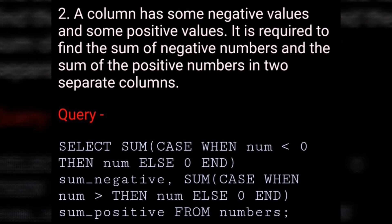A column has some negative values and some positive values. It is required to find the sum of negative numbers and the sum of positive numbers in two separate columns. SELECT SUM(CASE WHEN num < 0 THEN num ELSE 0 END) AS sum_negative, SUM(CASE WHEN num > 0 THEN num ELSE 0 END) AS sum_positive FROM numbers.